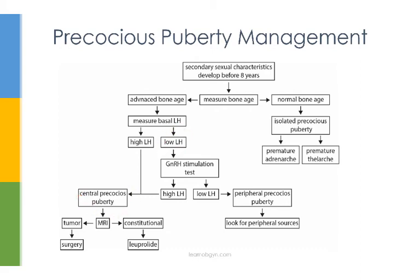If you measure basal LH and it's low, you're not sure yet. What you would do in this scenario is a GnRH stimulation test. You give the patient leuprolide. If they have central precocious puberty, their HPG axis is already primed and will respond to leuprolide by increasing LH. If you see high LH, you know you have central precocious puberty. However, if their LH levels remain low, then you know they have peripheral precocious puberty.